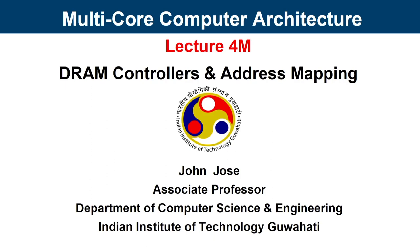Welcome to lecture 4 on DRAM Controllers and Address Mapping. We have already seen the DRAM hierarchy in the last lecture, where the organization of DRAM consists of channels, DIMMs, ranks, chips, banks, rows, columns, and the structure of a bit cell. This whole memory hierarchy is controlled by a DRAM controller, which acts as the brain of DRAM. In old memory system designs, the memory controller was housed on the north bridge, whereas in modern processors the memory controller resides inside the CPU chip. We will learn about its functionalities and capabilities and see how DRAM controllers impact address mapping.